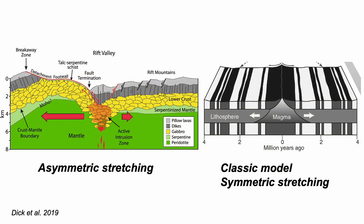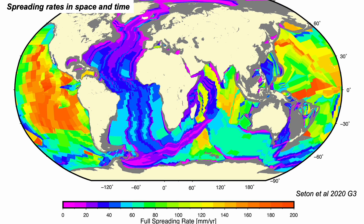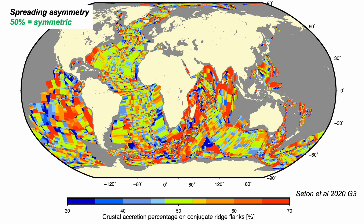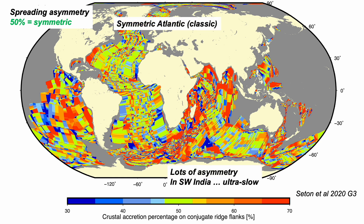The global surveys compiled by Maria Seton and co. are detailed enough now to detect the difference — they track out spreading asymmetry. On this map, symmetry, where new plate is equally distributed on either side of the plate boundary, is in green. Strongly asymmetric is in red. The Atlantic, mostly formed magmatically, is systematic and symmetrical. The Southwest Indian Ridge in contrast — ultra-slow, with lots of faulting and lots of asymmetry.